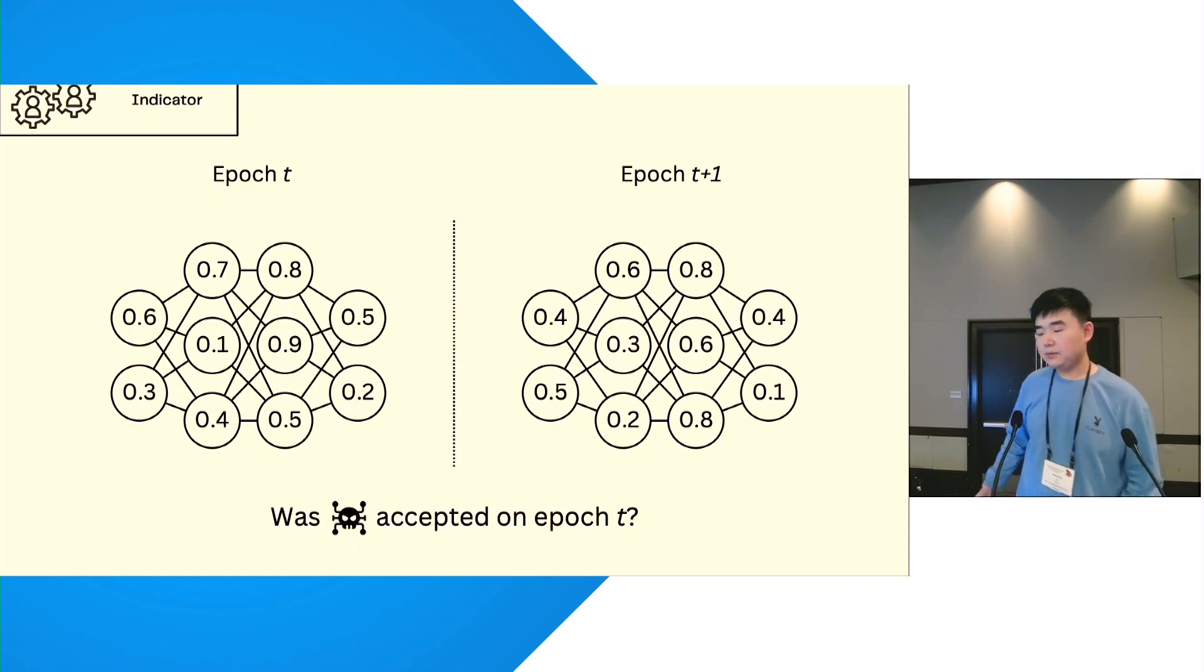The technique we propose is called the indicator, which is based on our observation that some neurons will not change by too much when the model is close to convergence. We call them redundant neurons.